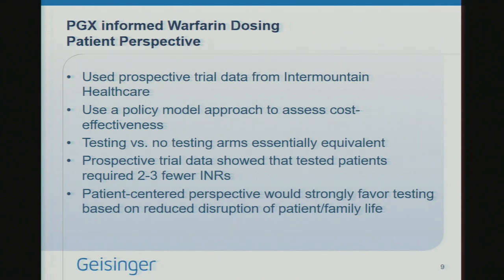The third study shows the importance of using a patient perspective. There was a small prospective pharmacogenomic-informed trial of warfarin at Intermountain Healthcare. We worked with David Veenster and his group at the University of Washington to develop a policy model using these data to assess cost-effectiveness. What we found was that if you tested preemptively versus not doing testing, the arms were essentially equivalent — we couldn't really detect much of a difference.